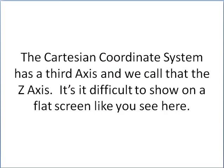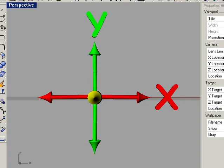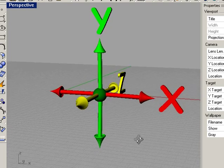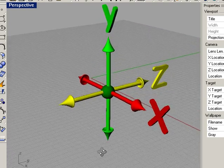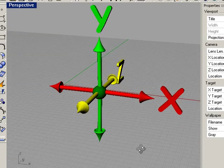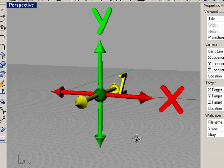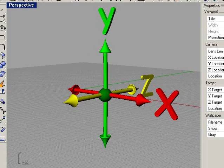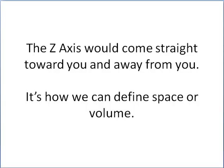The Cartesian coordinate system has a third axis called the z-axis. It's difficult to show on a flat screen, so I have this graphic to show you. You can see the x and y, but if I rotate this, you'll see that the z comes into play—the z is 90 degrees to the x-y plane. The z-axis comes straight toward you or away from you. It's how we can define space or volume.